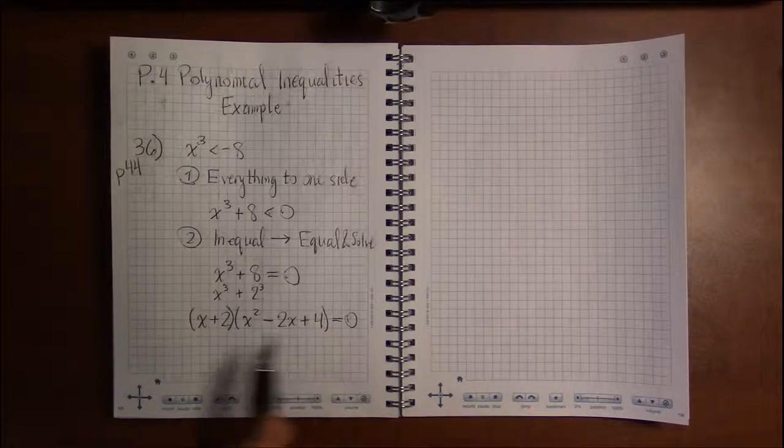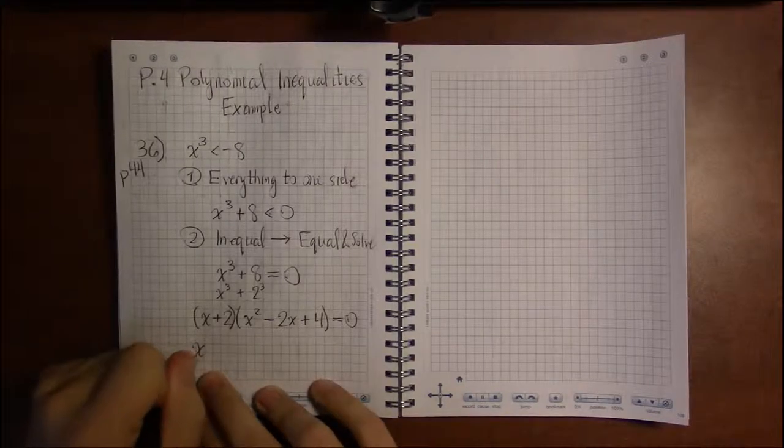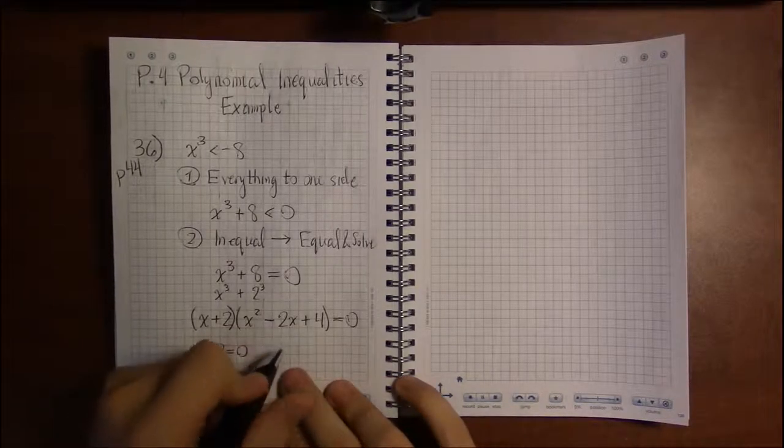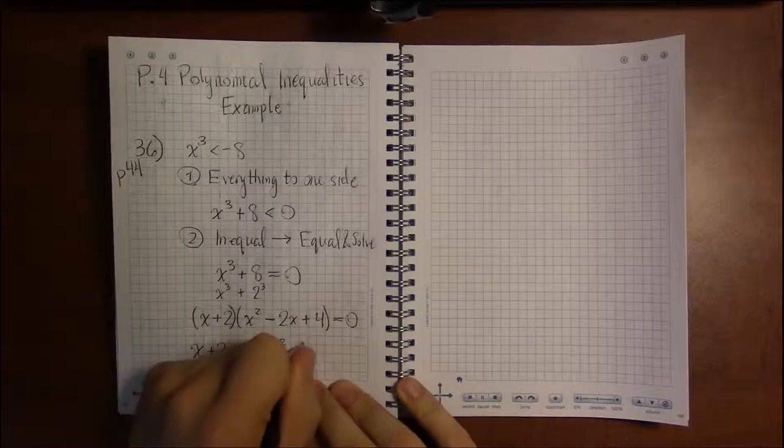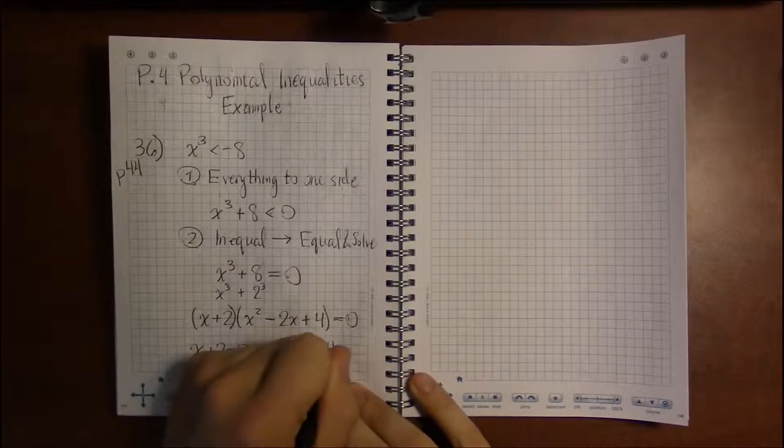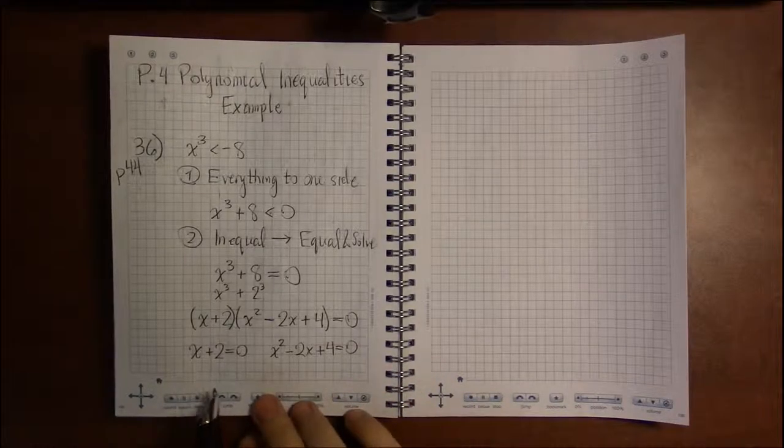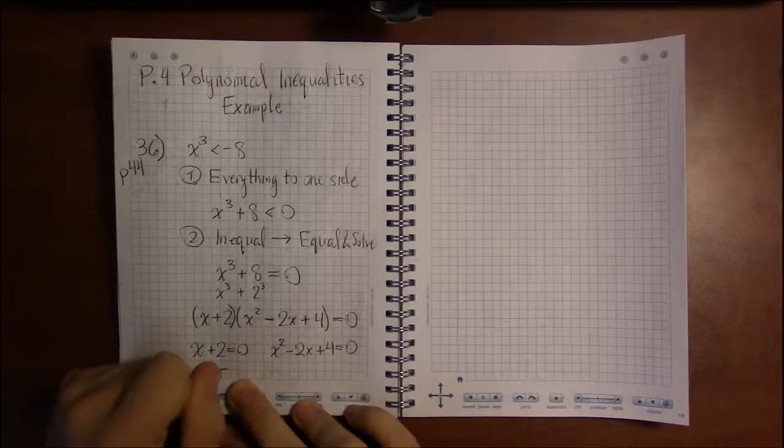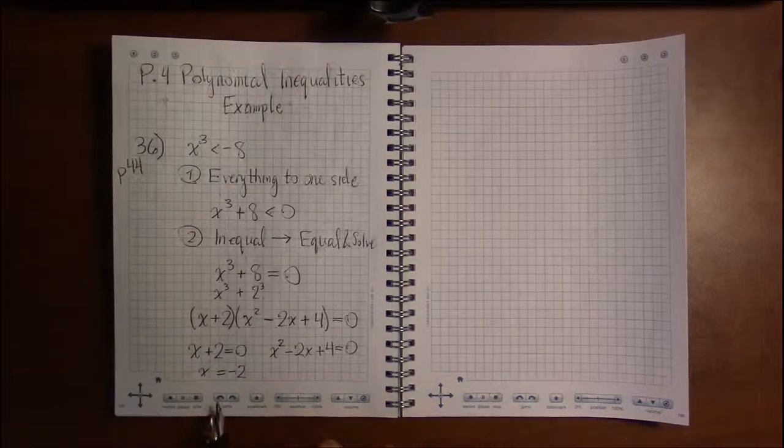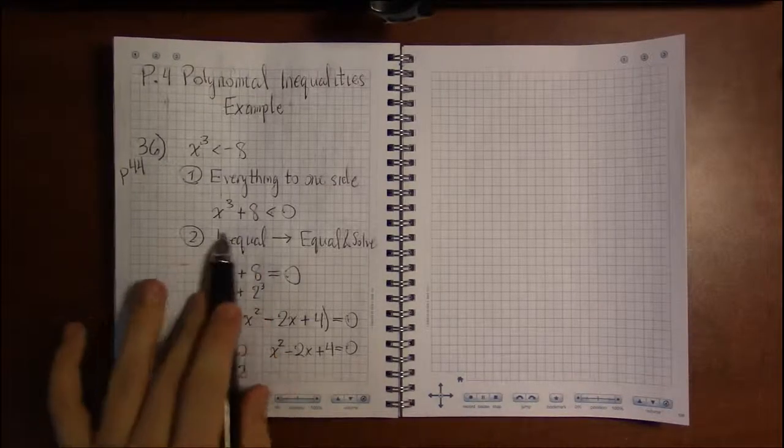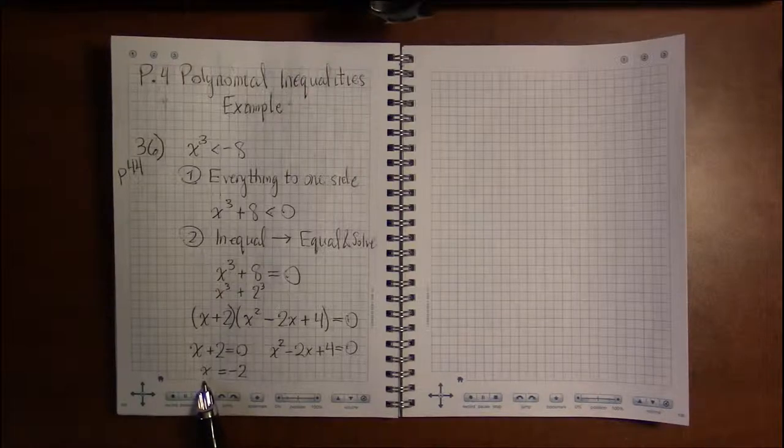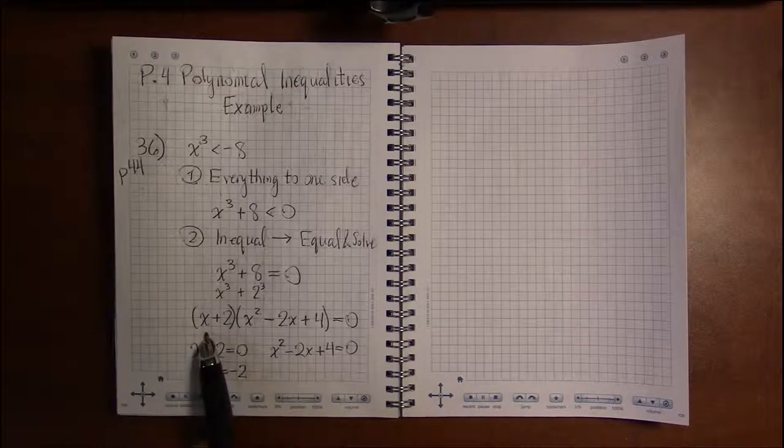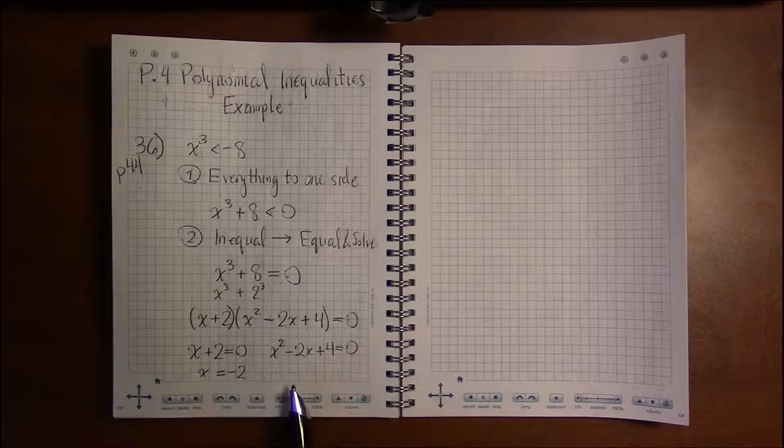We now set each of the factors equal to 0. So we set x plus 2 equal to 0, and over here we set x squared minus 2x plus 4 equal to 0. This one's easy. x plus 2 equals 0. Subtract 2 from both sides and you get x equals minus 2. That's one place where this polynomial is 0. This is another story. This won't factor. That's what I meant when I said this is as factored as we can get. You can't break this down any further.